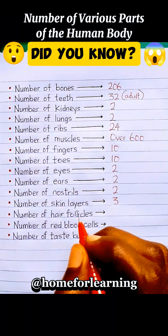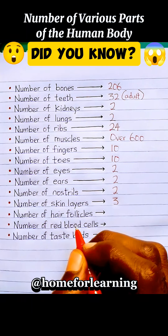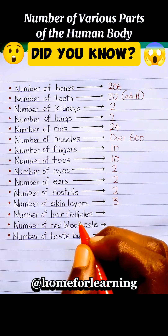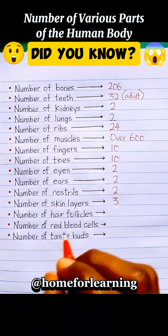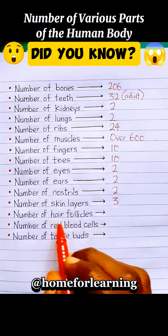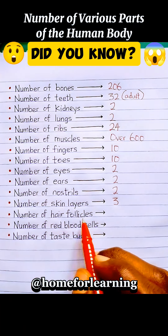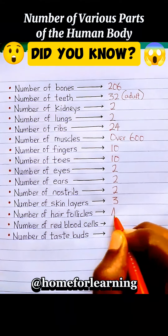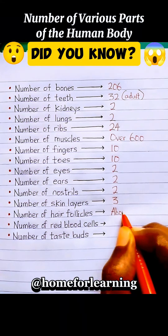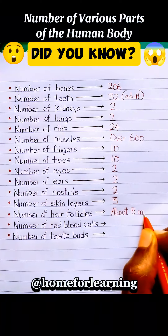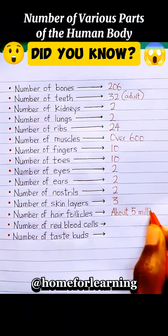Number of skin layers: three. These skin layers are called the epidermis, dermis, and hypodermis. Number of hair follicles: the number of hair follicles in the human body is about 5 million.